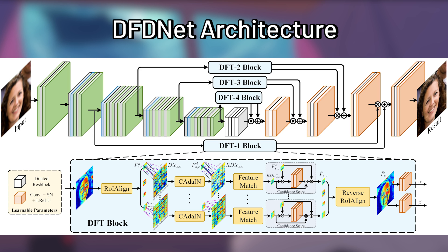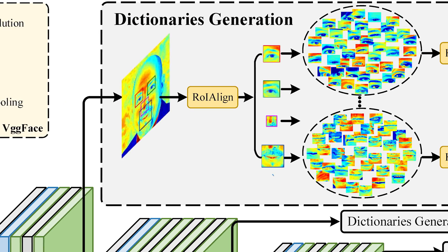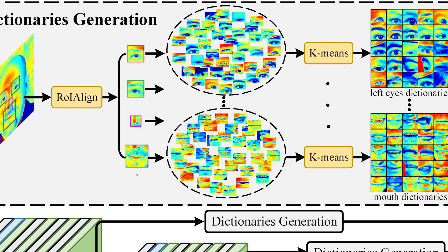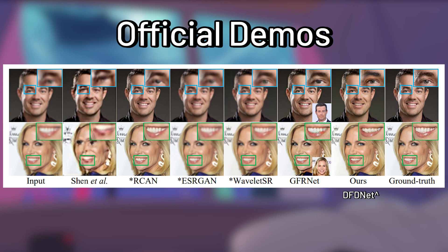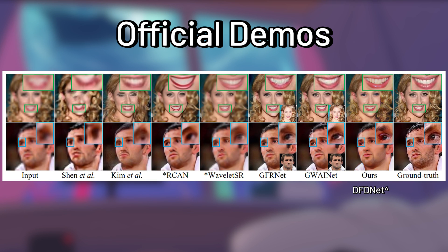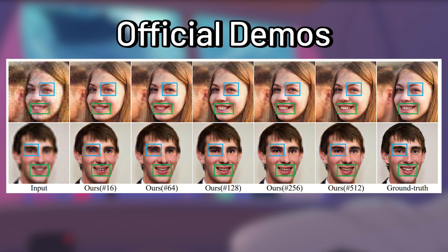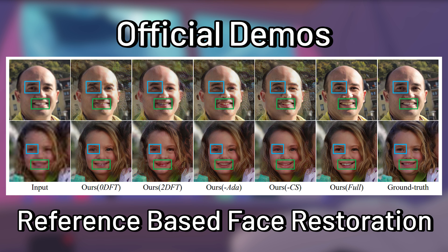Similarly, what DFTNet does is that it segments more visually detailed parts of the face like the eyes, mouth, and teeth, and guides the upscaling AI by matching similar features in low resolution and uses the trained model to provide a matching guess of how it would look in higher resolution with clearer details. This is called reference-based face restoration.